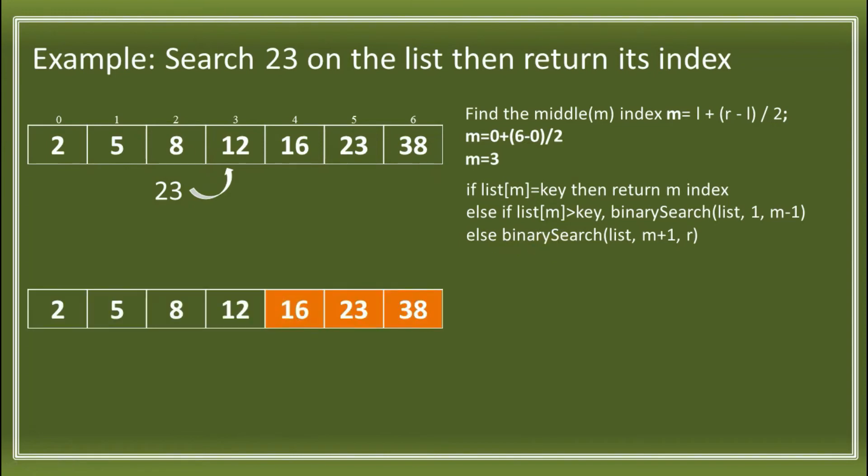Basically, we'll shorten the array. This is now our array, which starts at index 4. In the remaining part of the array, we'll find the middle index again. We have m equals 4 (the left index) plus 6 minus 4 divided by 2. We have 4 plus 6 minus 4, that is 2, divided by 2. So that becomes 1. So 4 plus 1, we have m equals 5.